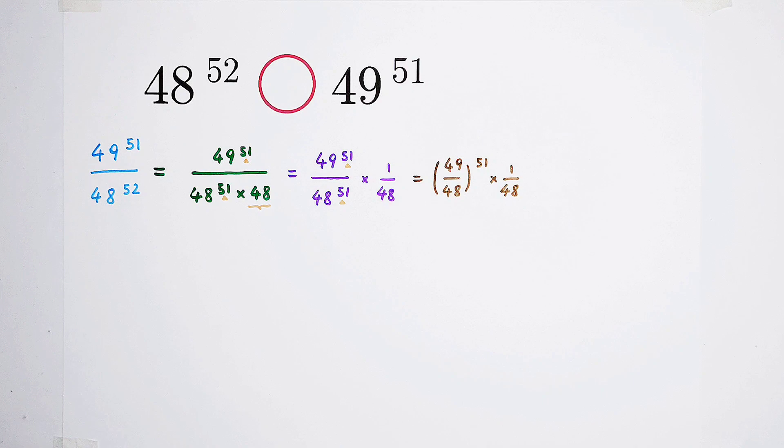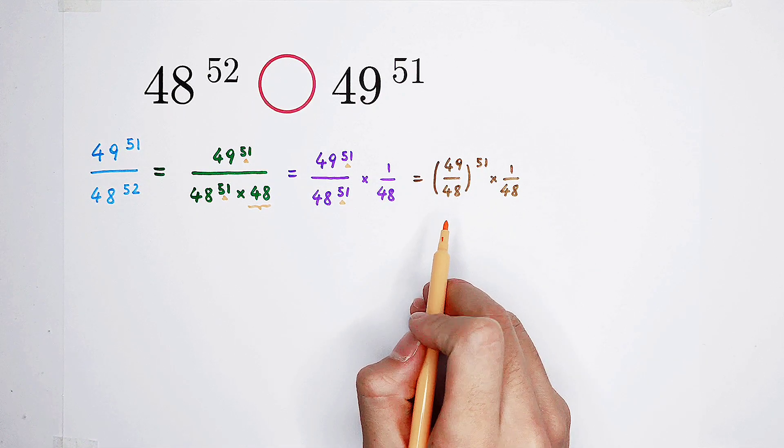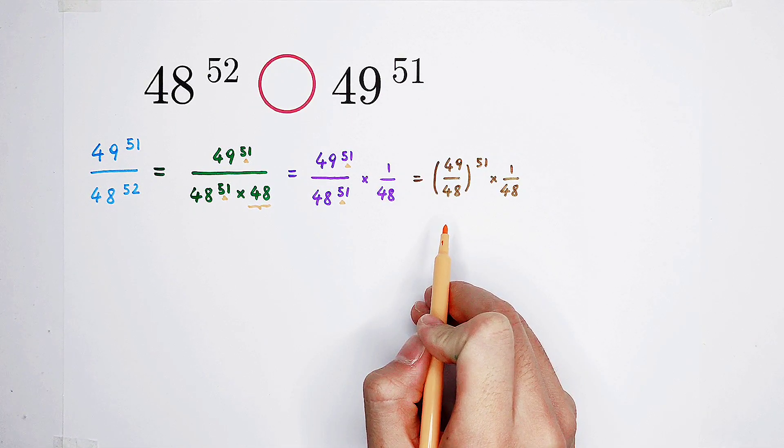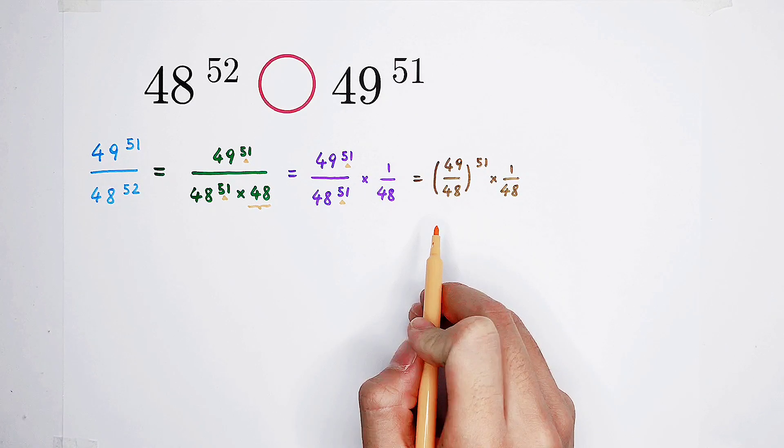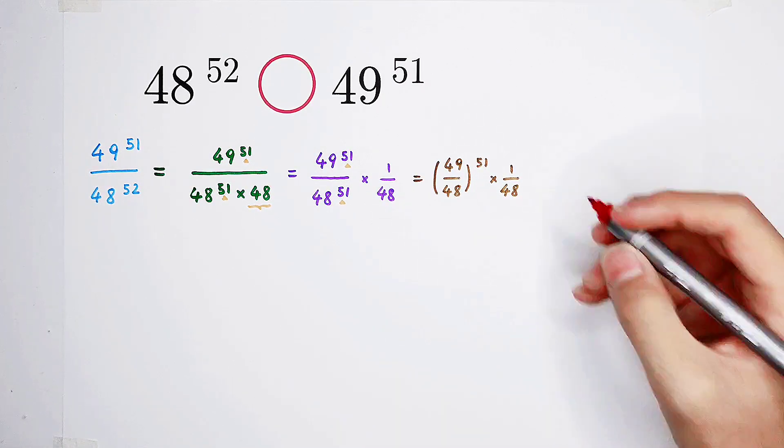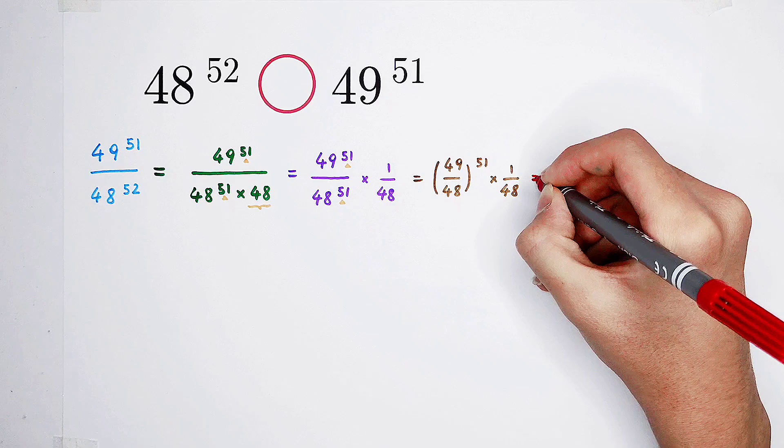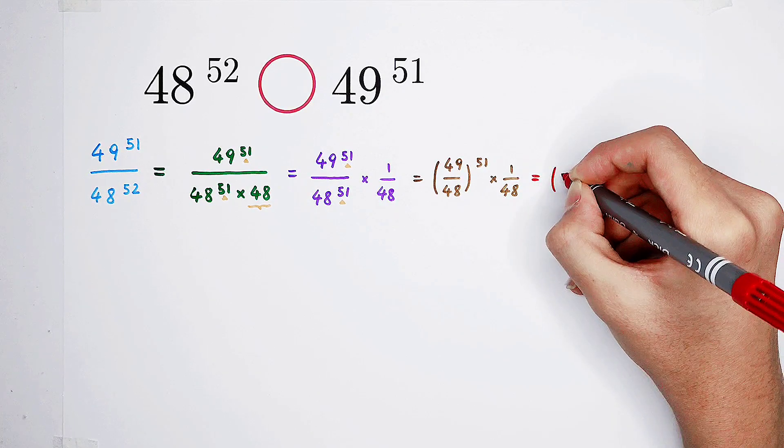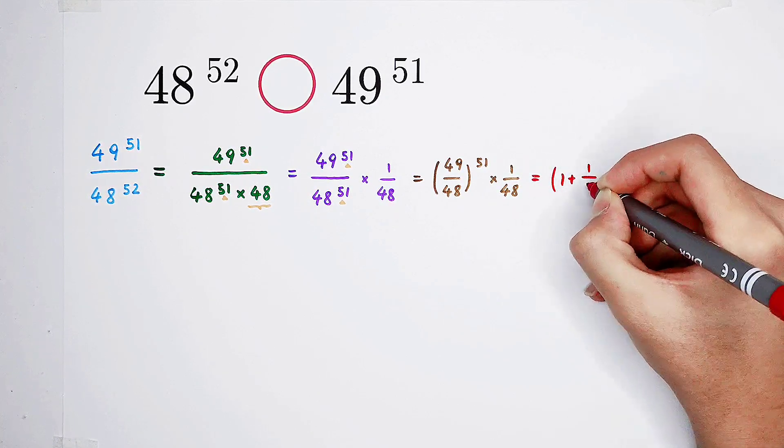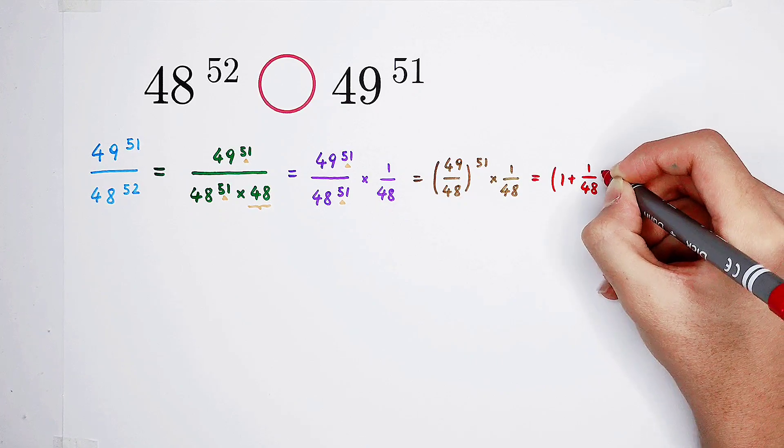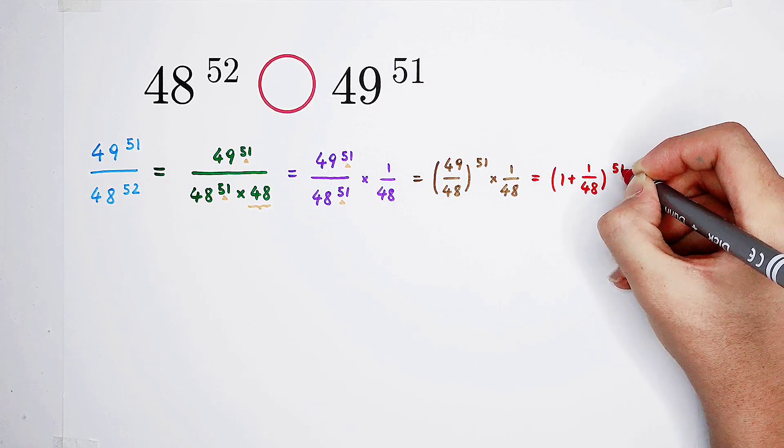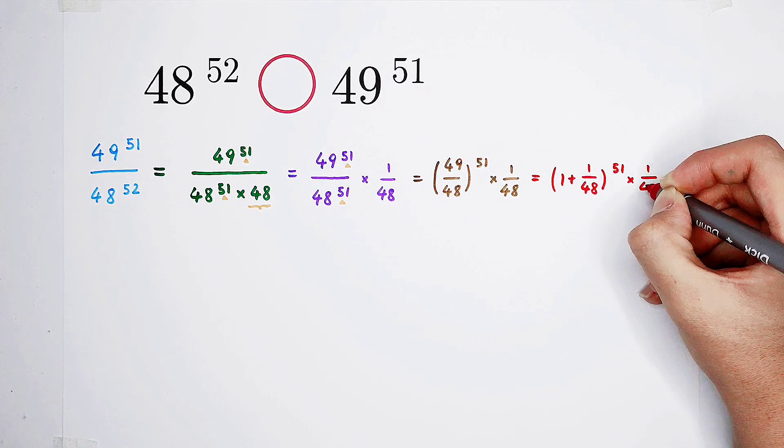However, this fraction is so ugly that we have to do something on it. 49 is 48 plus 1. So 49 over 48 can be written as 1 plus 1 over 48. It is 1 plus 1 over 48, then also the power of 51, then times 1 over 48.